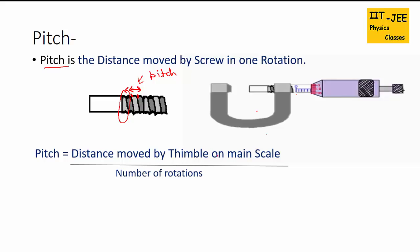So distance moved by thimble on main scale would be 5 millimeters. As we did 5 rotations, so this distance is for 5 rotations. So we need to divide it by number of rotations. That will give us the distance for 1 rotation, that is 1 millimeter. Almost all the screw gauge has pitch as 1 millimeter. So 1 millimeter is the pitch of this screw gauge.